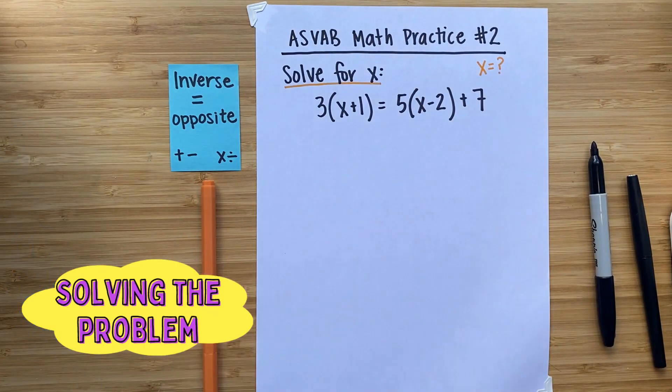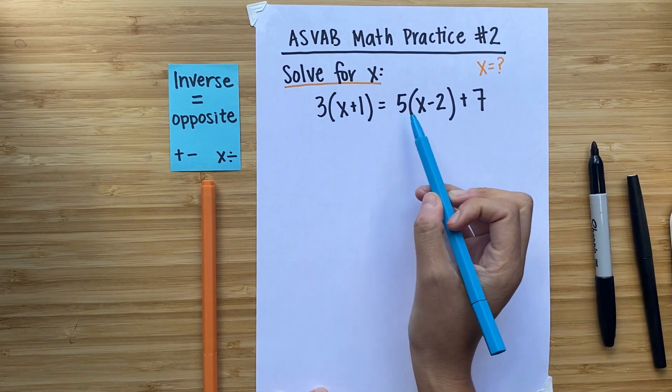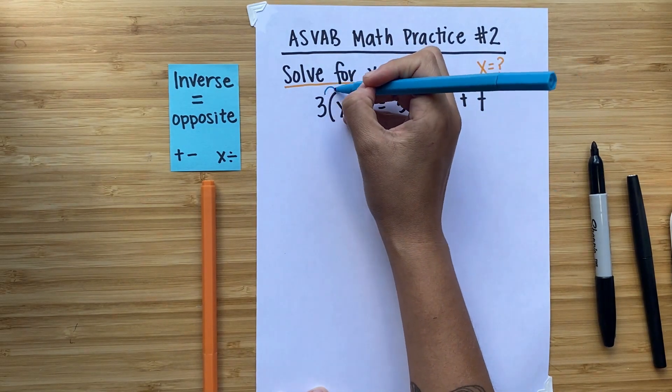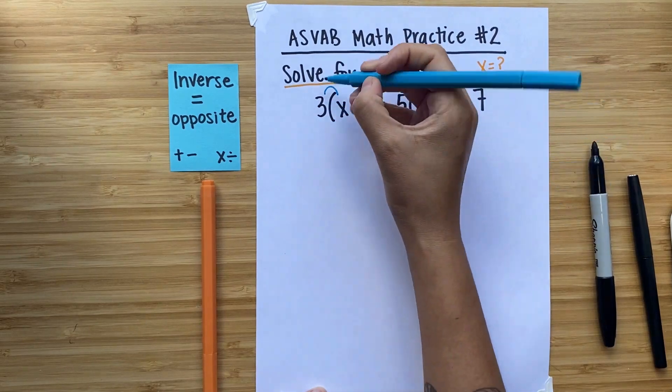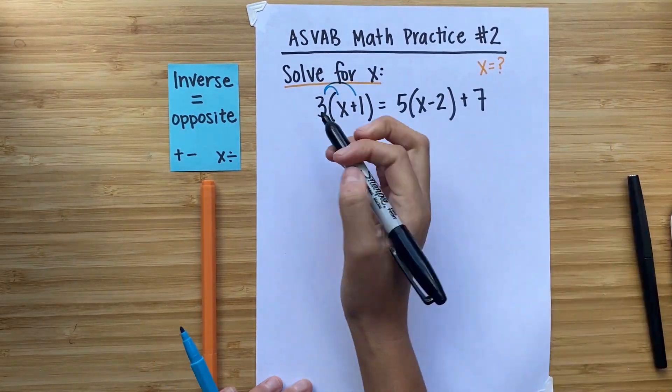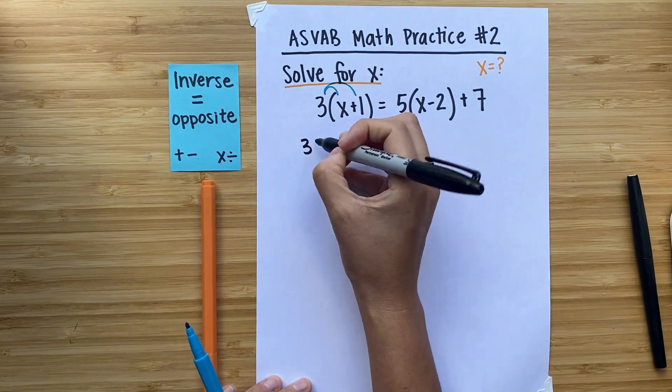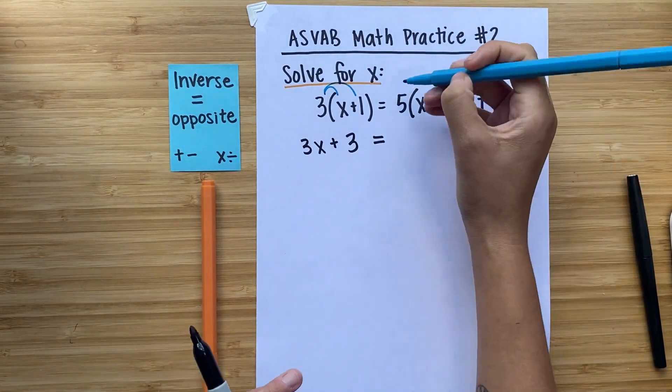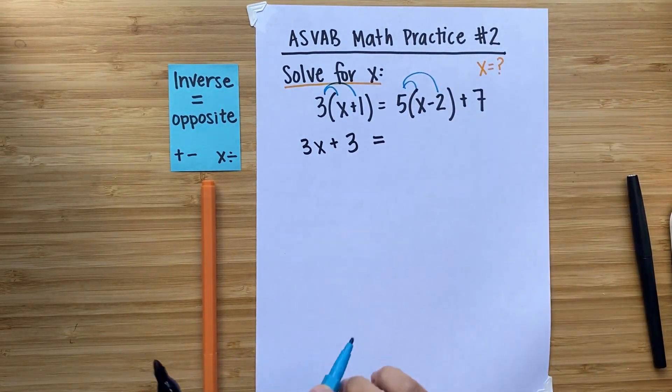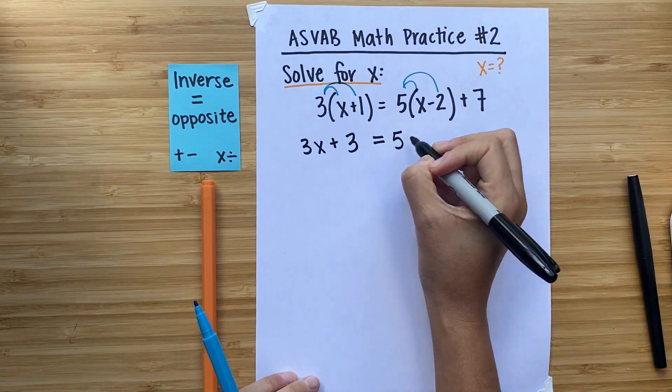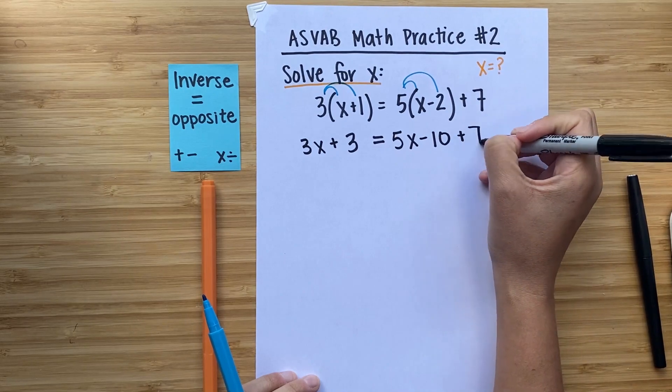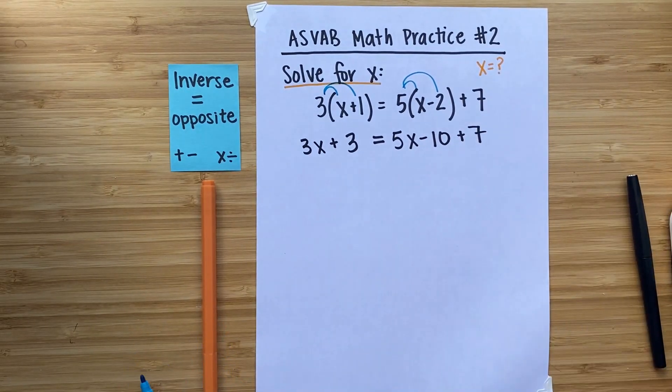The first thing that we're going to want to do is simplify this equation. So I can see on both sides of this equation, I'm going to need to use the distributive property. So I'm going to multiply 3 times x and then 3 times 1. That's going to give me 3x plus 3 times 1 is 3 is equal to, and I'll do the same thing over here. 5 times x and then 5 times negative 2. 5x minus 10 plus 7. Nothing's happening there, so it just gets brought down to the next line.